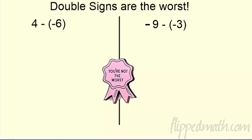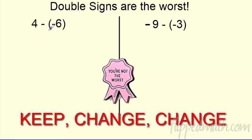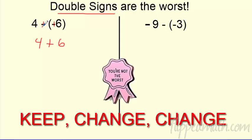Here is probably the trickiest thing, and this is what a lot of people remember. You'll probably remember this as keep change change. The idea is if I have a double sign — double signs are the worst. If I have a minus minus, going negative negative, that means you're going positive. So a lot of people like to use keep change change: you keep the first number, you change these double signs because they're touching — negative negative. This really means four plus six, which is ten. So this can be the trickiest thing: when you see minus minus, it's actually plus.